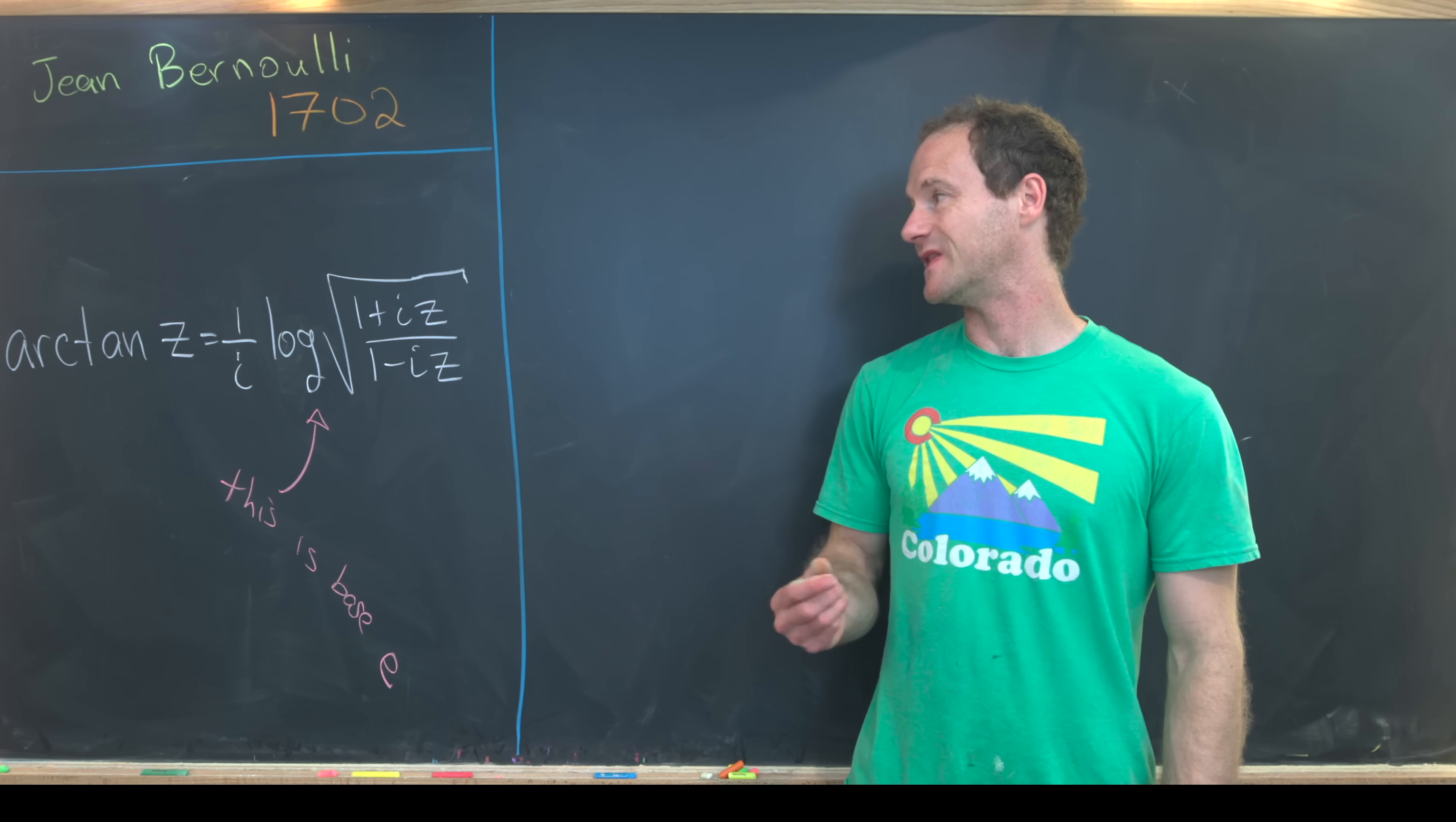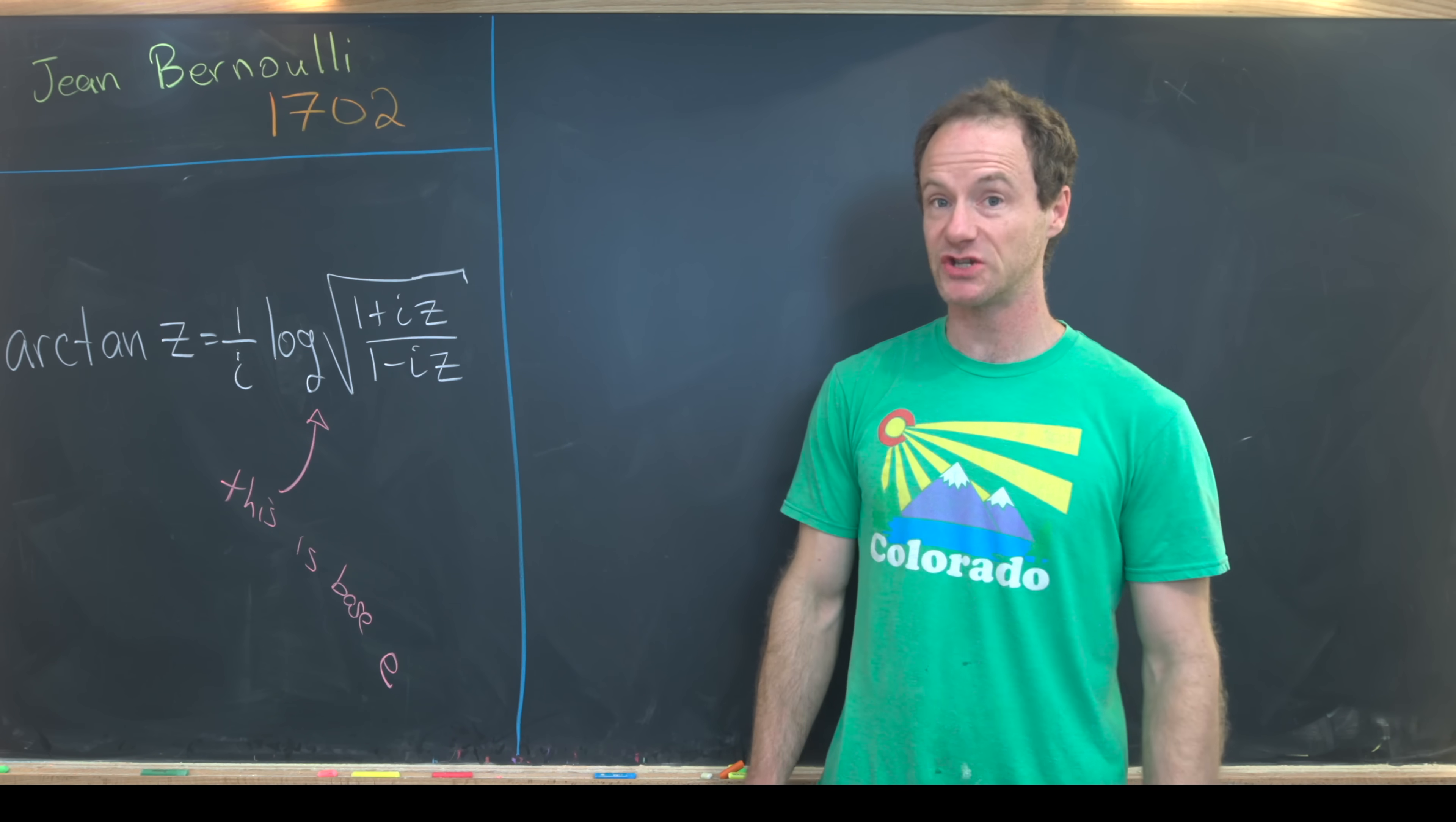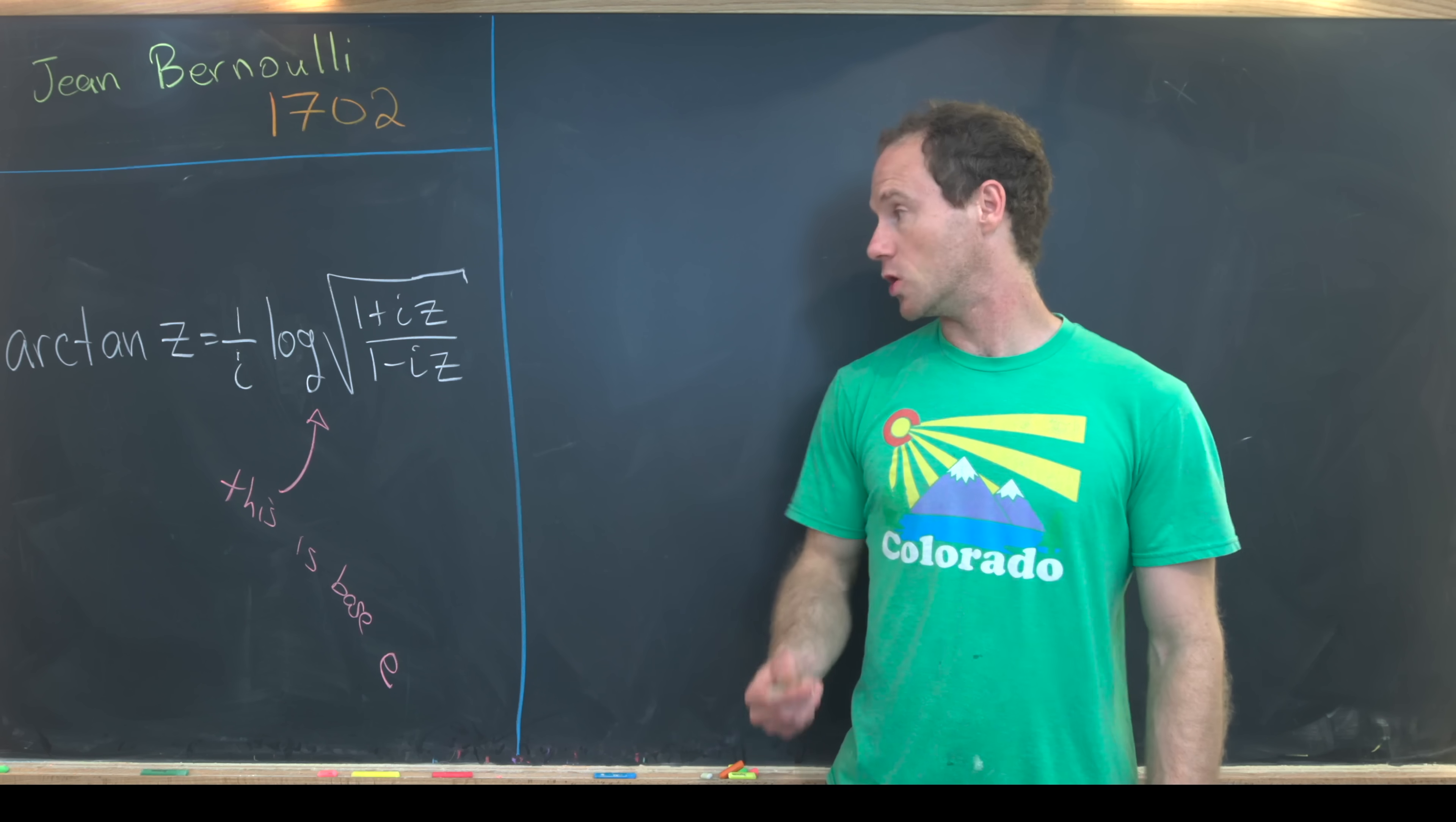Here I've got a nice identity between the inverse tangent and the complex logarithm. I want to point out that this is the tangent evaluated at potentially a complex number, although it could be a real complex number. This identity is first due to Jean Bernoulli, and this is from 1702.